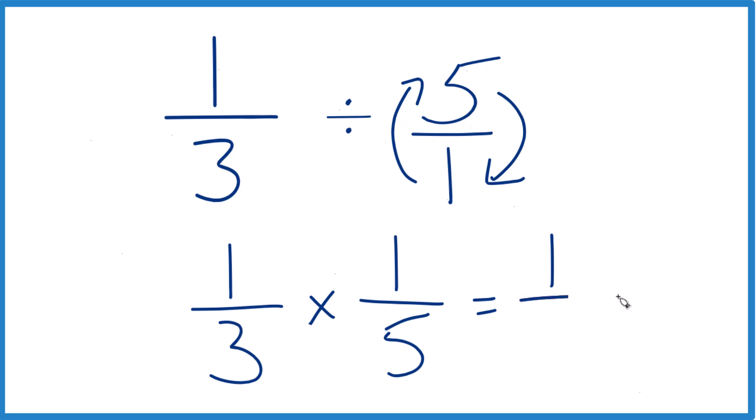Multiply the numerators: 1 times 1 is 1. Multiply the denominators: 3 times 5 is 15.